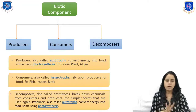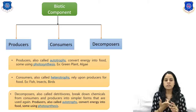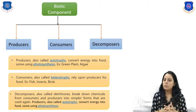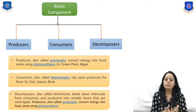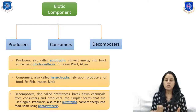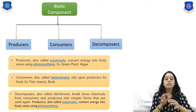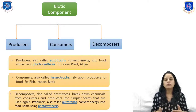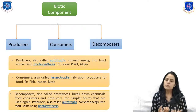The biotic component is further classified into three major parts: producer, consumer, and decomposer. Producers are also called autotrophs, meaning they convert energy into food. For example, plants use the process of photosynthesis to produce food, so they are called producers.